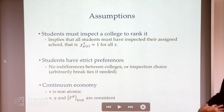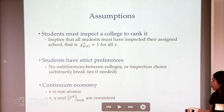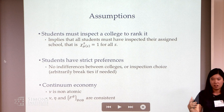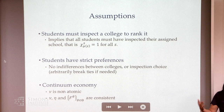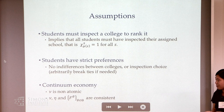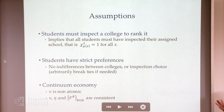Our assumptions: students must inspect a college in order to be assigned to it — this is mainly for tractability, since allowing assignment without inspection leads to Pandora's box with non-obligatory inspection, which has a very complicated optimal policy even for one student and two boxes. We also assume students have strict preferences; when they're not strict, we break ties in a fixed way.